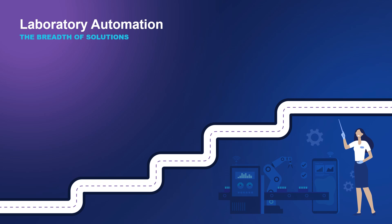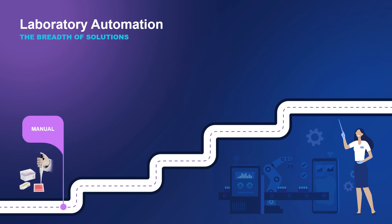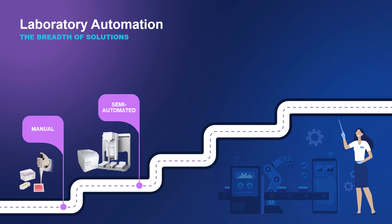Laboratory automation exists on a spectrum from manual to fully automated systems. We can start off with manual — being able to facilitate the running of manual processes with digital SOPs, guiding humans through different actions such as pipetting or weighing samples, which is very much suitable for labs where full automation might not be feasible or necessary. We then move up to semi-automated systems that combine manual and automated elements, often involving liquid handlers, with perhaps two or three devices integrated with a robotic arm that moves within the liquid handling deck.